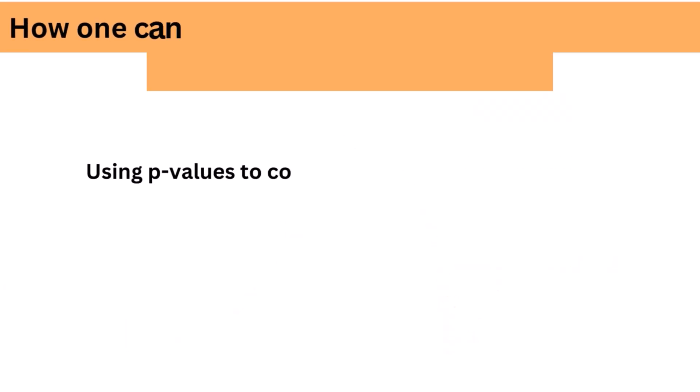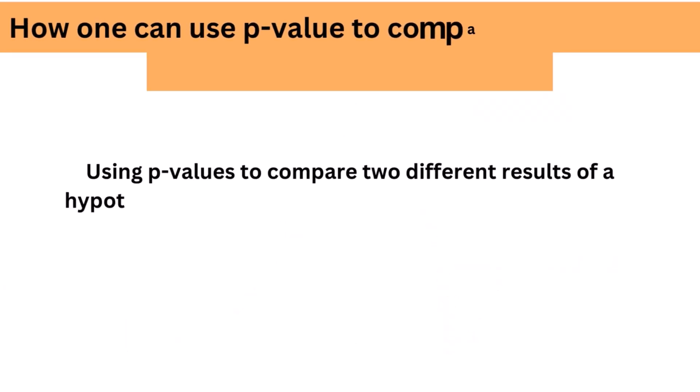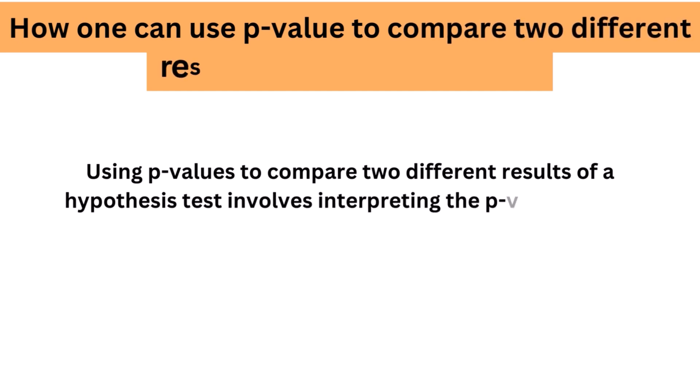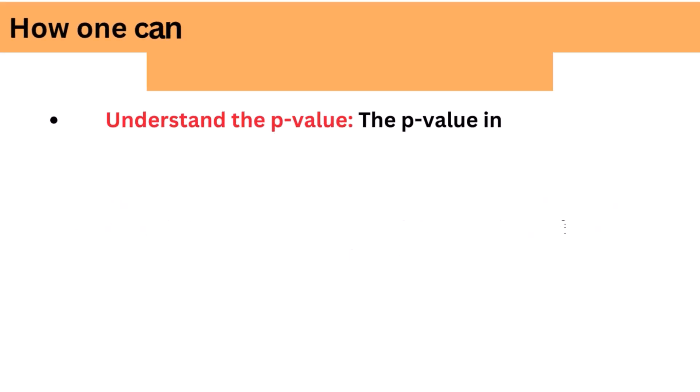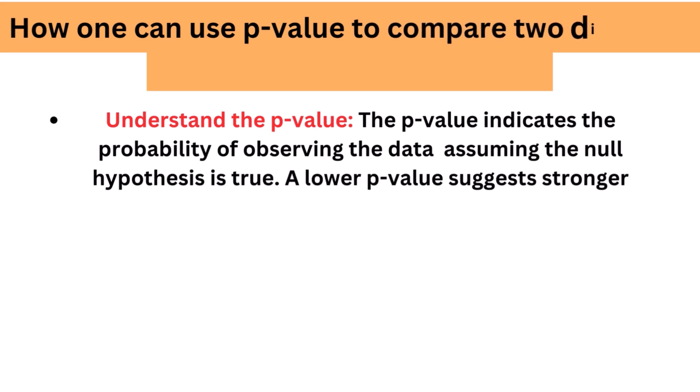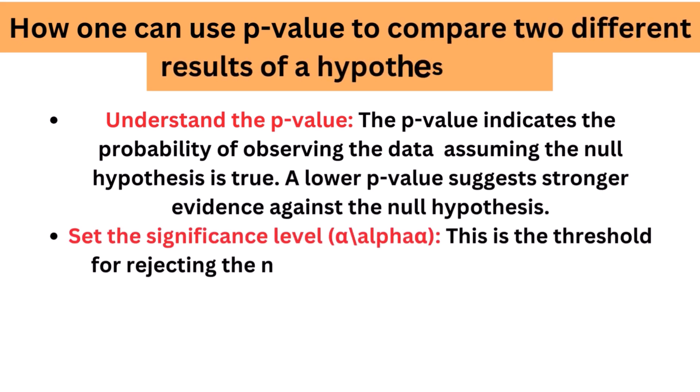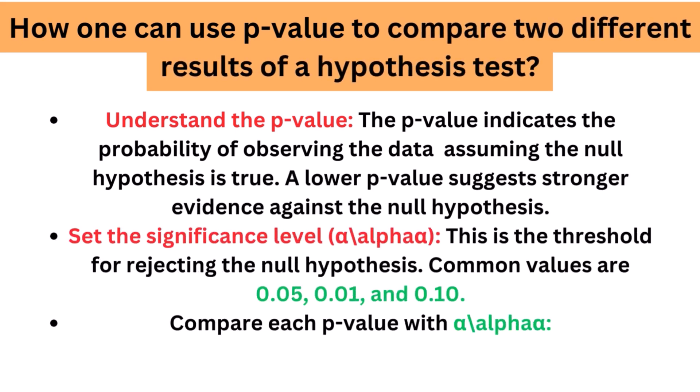How can one use p-value to compare two different results of a hypothesis test? What if we conduct two experiments using the same null and alternative hypotheses, or conduct the same clinical trial twice with different drugs? Can we use the resulting p-values to compare them?